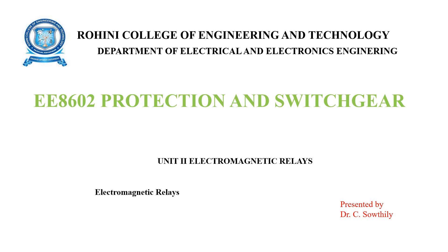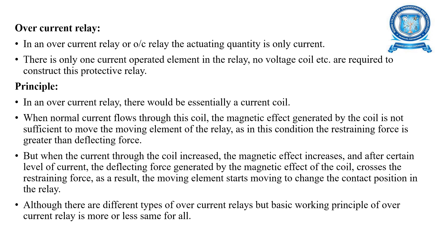We'll discuss electromagnetic relays. First is the overcurrent relay, where the actuating quantity is only current, so there is only one current-operated element in the relay with no voltage coil. The main principle is that a current coil is present. When current flows normally through the coil, the magnetic effect is not sufficient to move the moving element, but when current increases, the magnetic effect increases, and after a certain level the deflecting force crosses the restraining force.